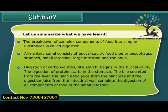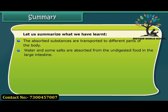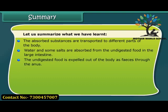Digestion of carbohydrates like starch begins in the buccal cavity. The digestion of protein starts in the stomach. The bile secreted from the liver, the pancreatic juice from the pancreas, and the digestive juice from the intestinal wall complete the digestion of all components of food in the small intestine. The absorbed substances are transported to different parts of the body. Water and some salts are absorbed from the undigested food in the large intestine. The undigested food is expelled out of the body as feces through the anus.